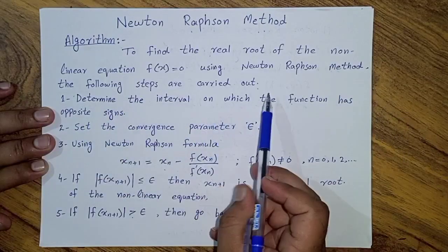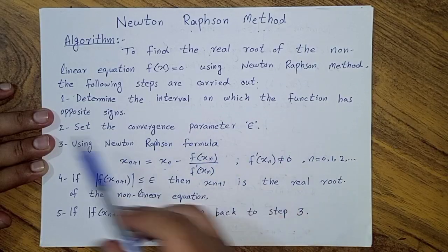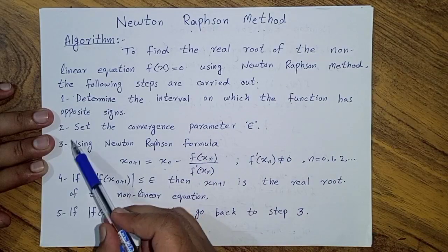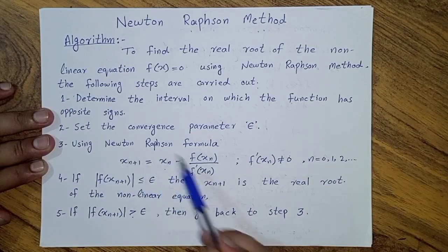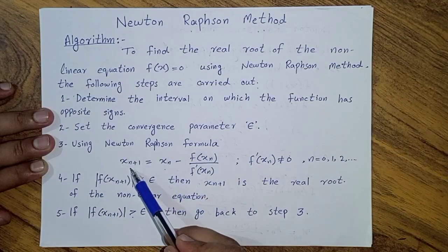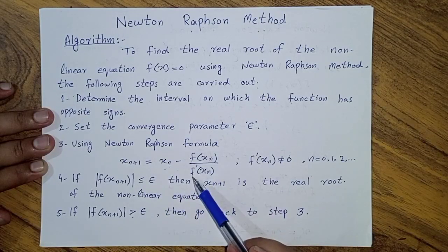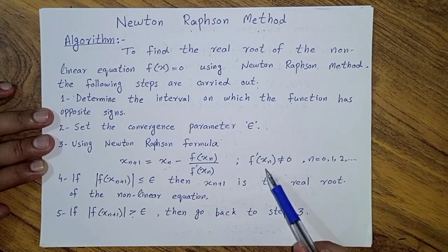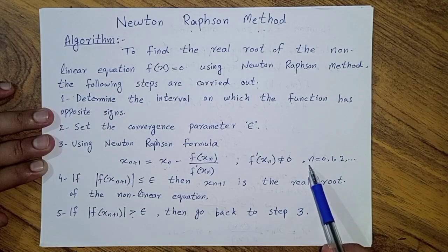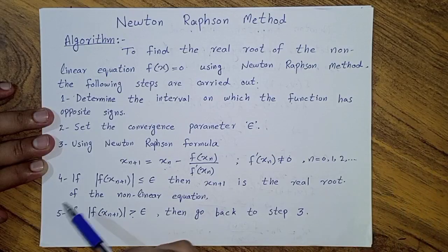The following steps are carried out. Step 1: determine the interval on which the function has opposite signs. Step 2: set the convergence parameter epsilon. Step 3: using the Newton-Raphson formula, x_(n+1) = x_n - f(x_n) / f'(x_n), where f'(x_n) ≠ 0 and n = 0, 1, 2, and so on.